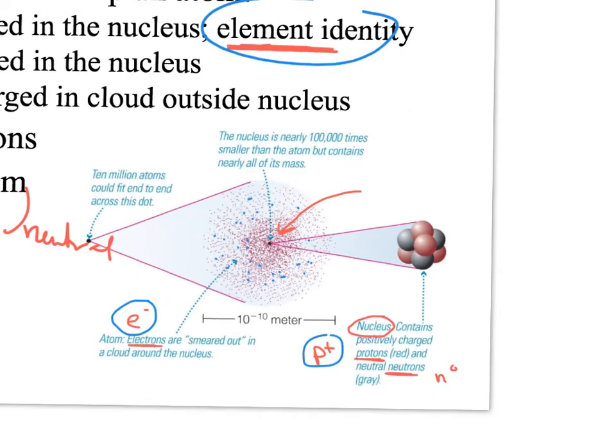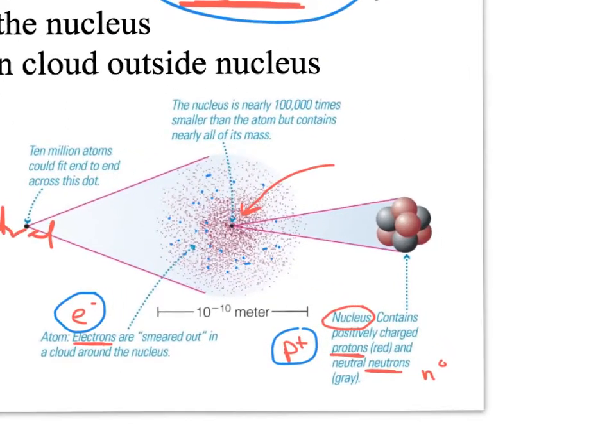For instance, we could go over here and say that the mass number is equal to - it looks like there are four red protons, four protons, plus there are three gray neutrons, so the mass number would be seven.